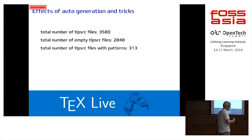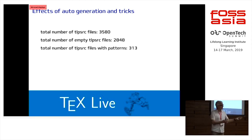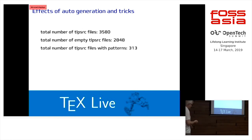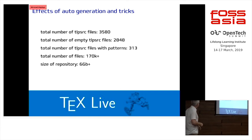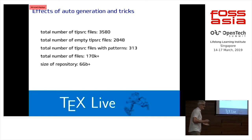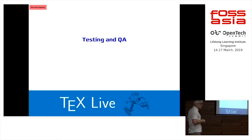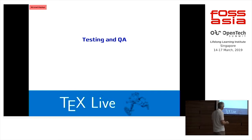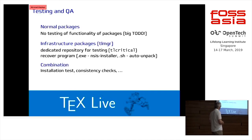We are two people working on this, basically — you want to automate everything as far as possible. In total, we have about 170,000 files in our distribution, and six gigabytes is the current installed size. We have a lot of people using this and updating it daily, so we have to go through a lot of testing and QA.